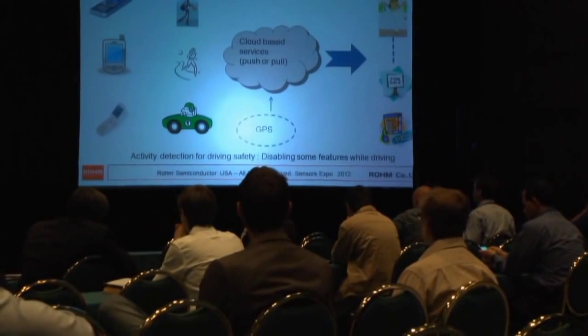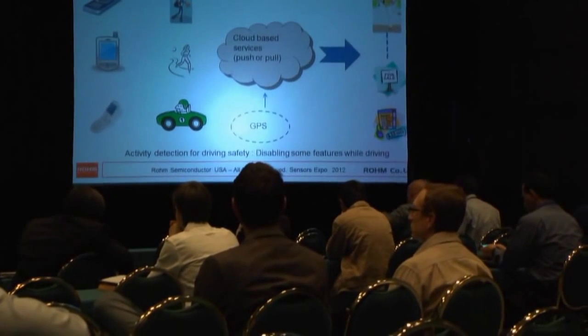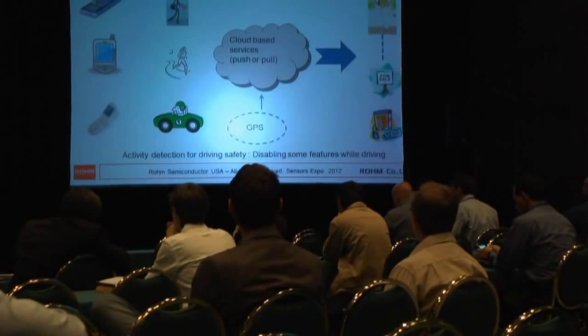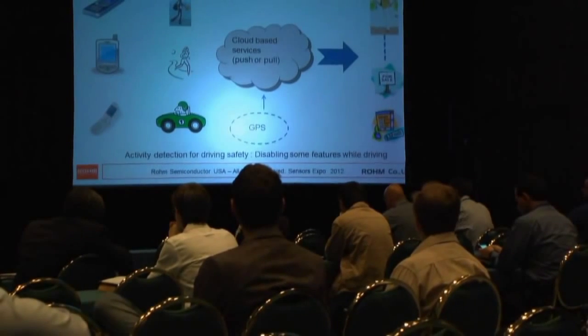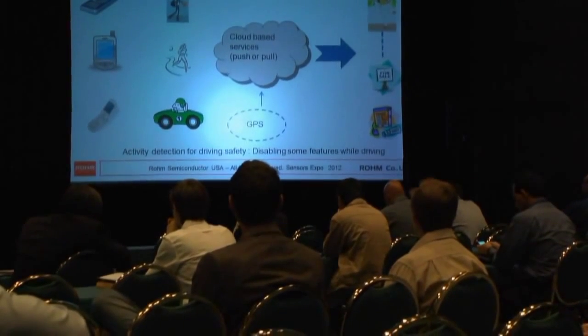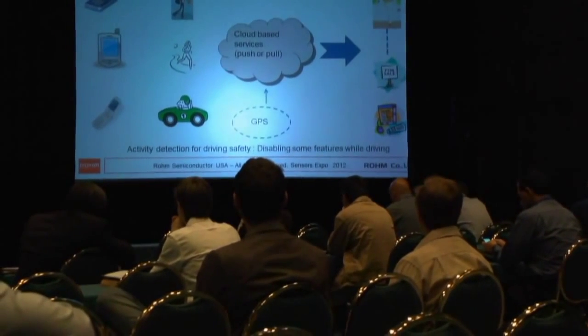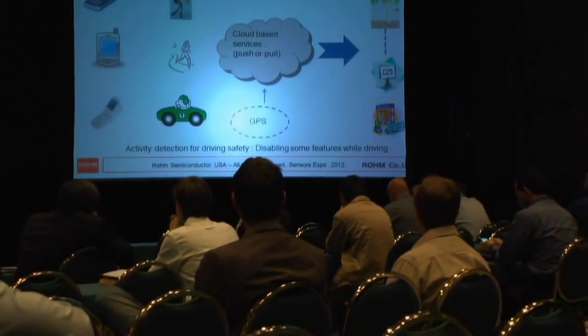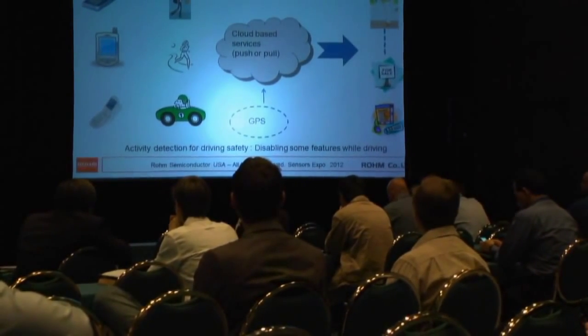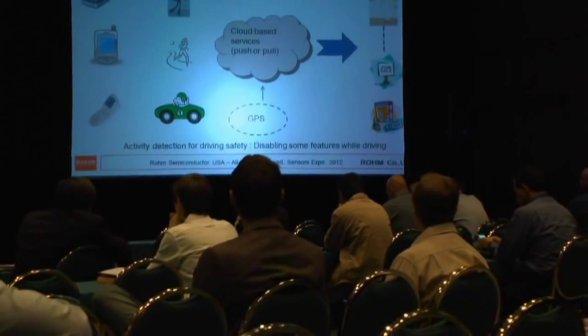GPS is shown in a dotted circle because it can add a lot of value. You need some kind of AGPS or GPS, and that would be beneficial.